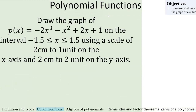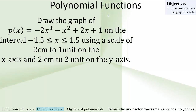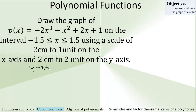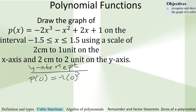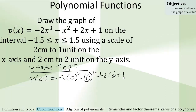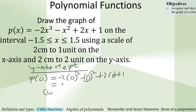Now let's consider some examples. Let's graph the polynomial function P of x equals negative 2x cubed minus x squared plus 2x plus 1. In general, we need to get the intercepts — the x-intercept and the y-intercept. For the y-intercept, we put x equals 0. So P of 0 equals negative 2 times 0 cubed minus 0 squared plus 2 times 0 plus 1, and that gives us 1. So the y-intercept is (0, 1).